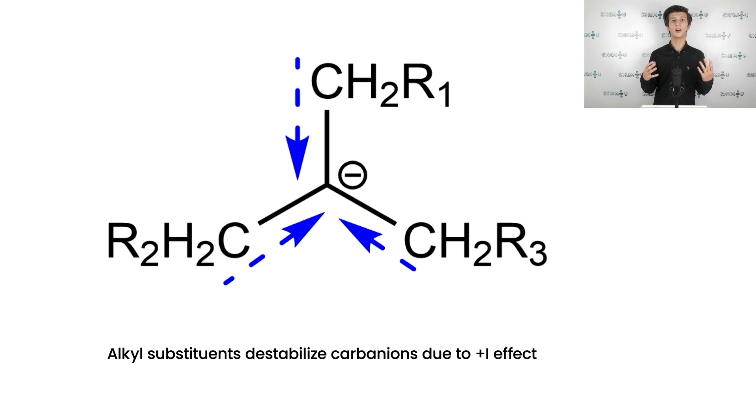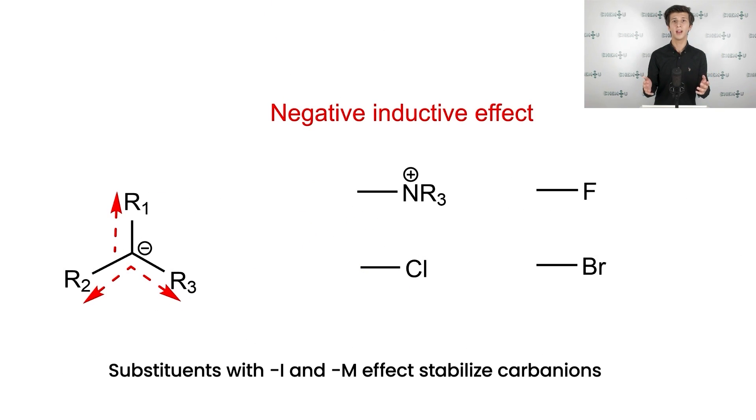Now, we have understood the carbanion stability is vital for E1CB mechanism, but how can we then stabilize carbanion? Substituents with minus I effect, and of course, substituents with negative mesomeric effect minus M, have a positive influence on carbanion stability. The first group can withdraw electron density from central carbon, thus increasing its stability. The negative inductive effect is depicted with dashed red arrows. Some examples of substituents that possess minus I effect are represented on the slide, for instance, halogens.